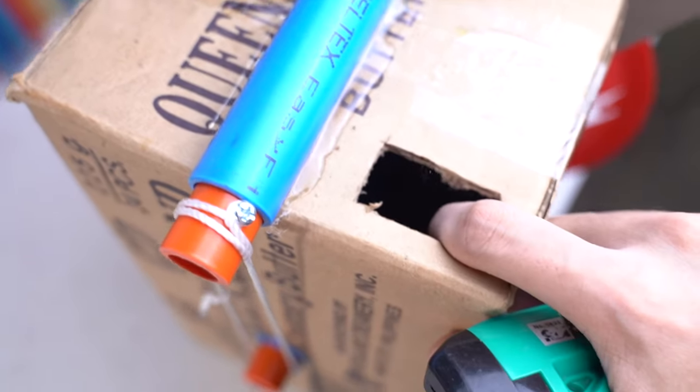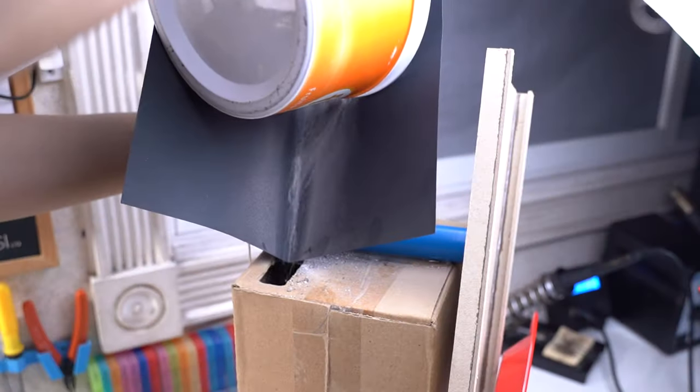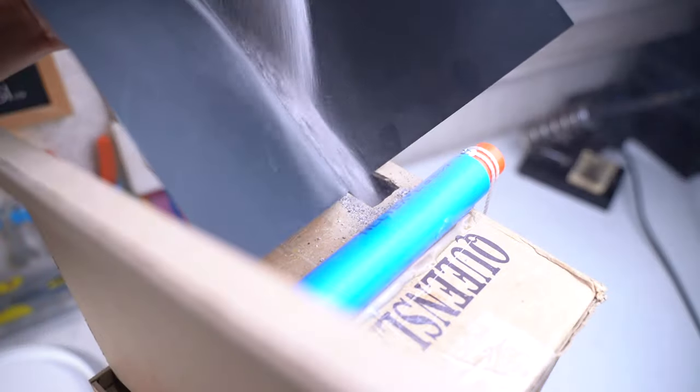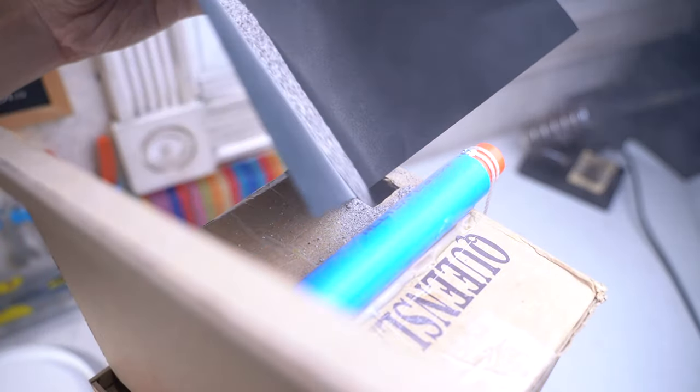Now cut a hole on top of your box, then make an improvised funnel using a paper. I'm pouring some sand into the box to add weight. This will prevent your box from tumbling down when you're using it.